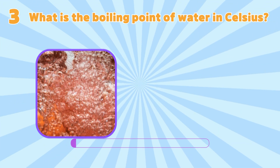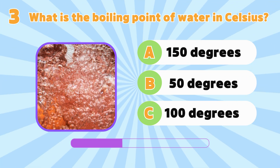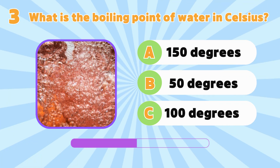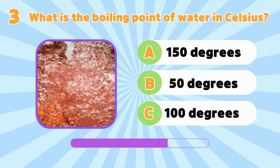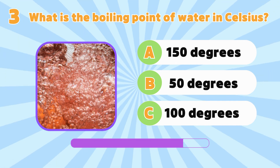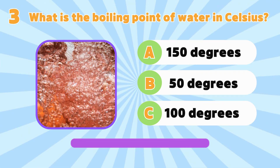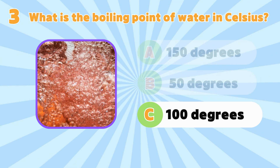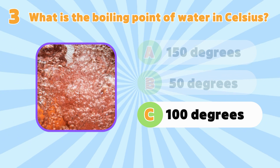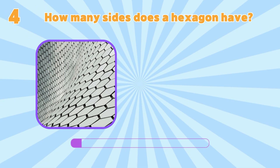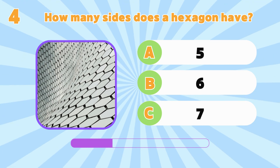What is the boiling point of water in Celsius? 150 degrees, 50 degrees or 100 degrees? Right! It's 100 degrees!